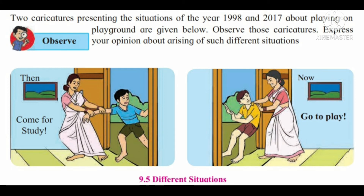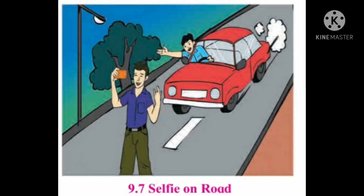Look at the diagram and controversial situations. In the first picture, before the new science and technology era, students were playing outdoors. But nowadays, students are spending only screen time. And now, mothers say go to play and do physical exercise. This is the controversial situation because of modern technology.